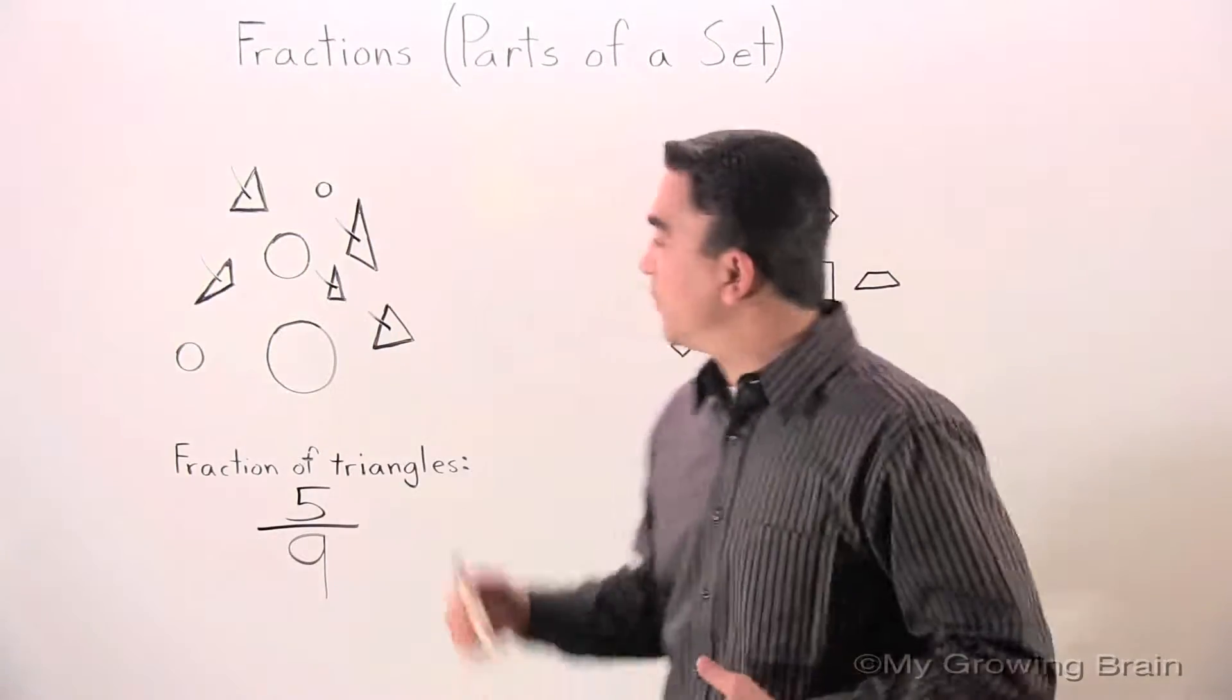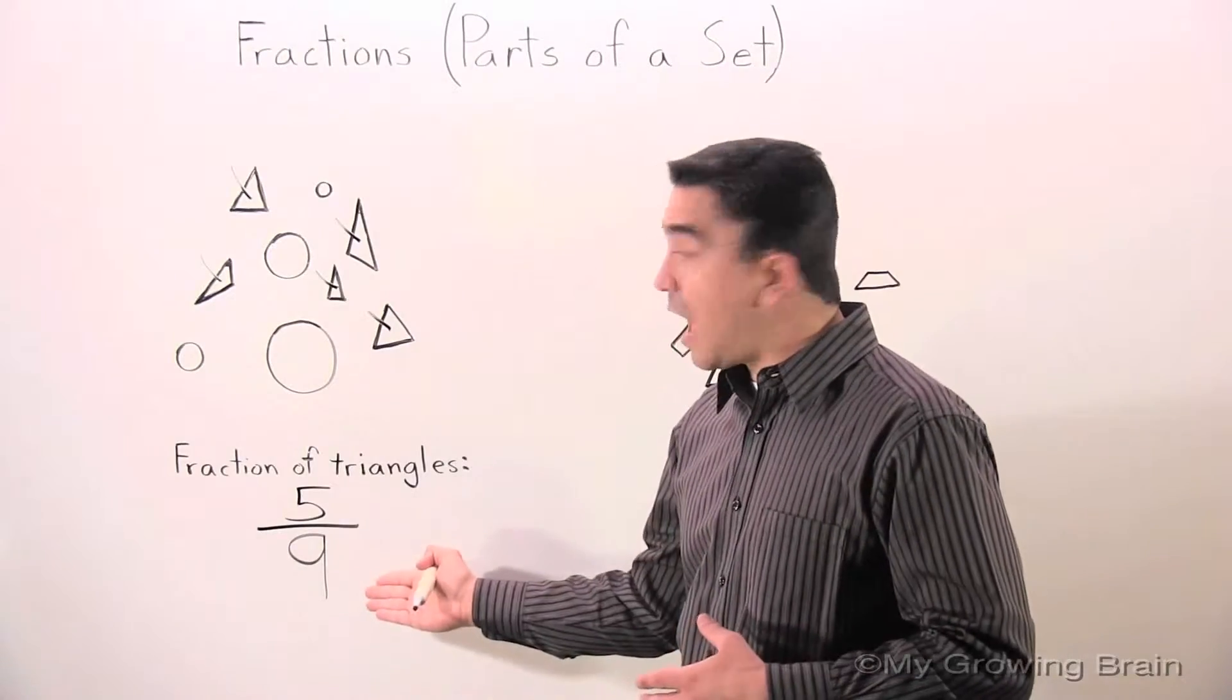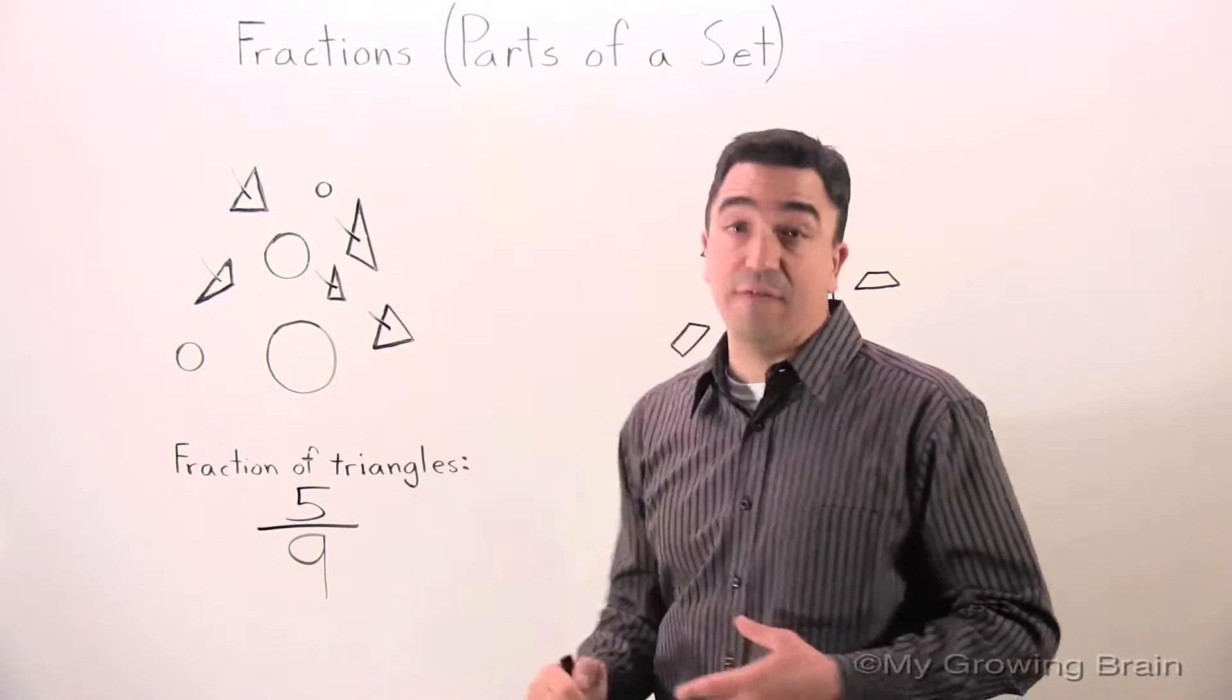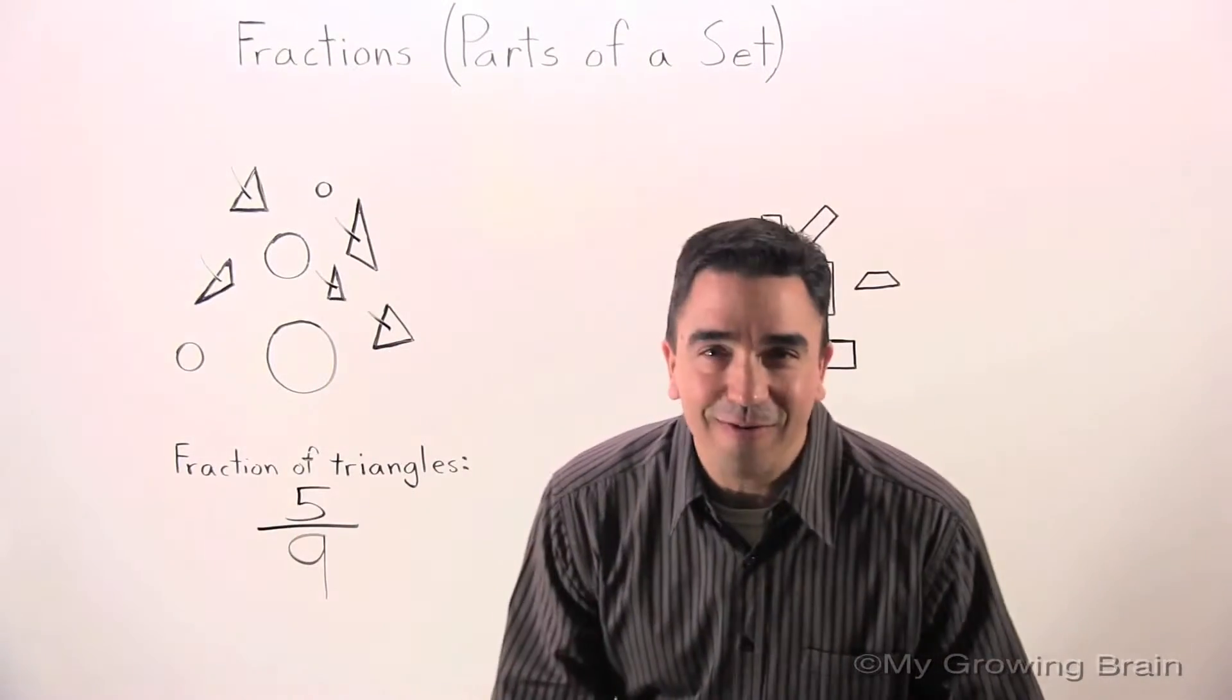The numerator is 5. So the fraction for this set is 5 ninths. Out of 9 shapes, 5 of them are triangles. Let's move on to our next example.